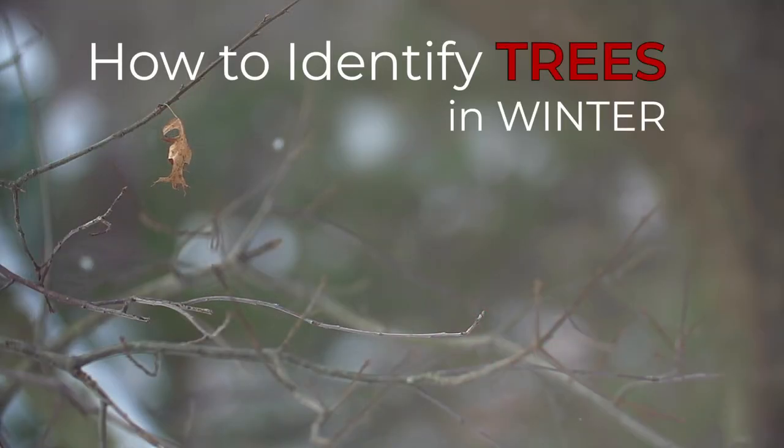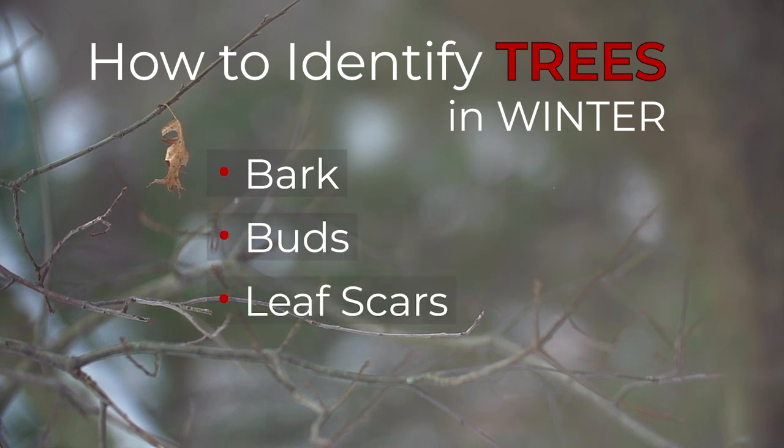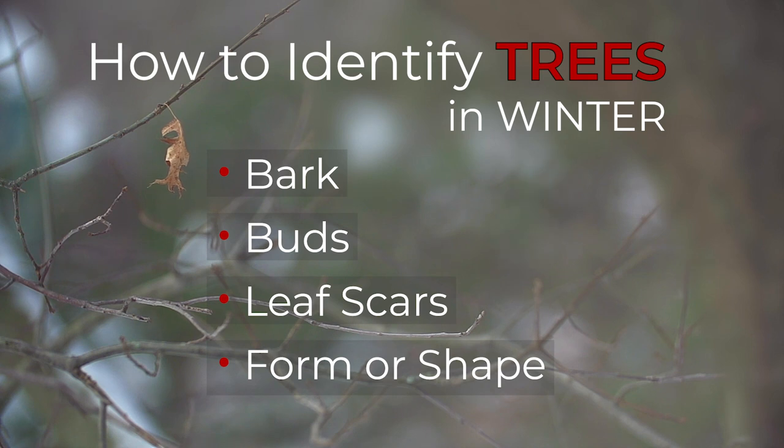Once you get conifers under control, you can turn to the broadleaf trees — that's another challenge altogether. What are you going to look for to identify broadleaf trees in winter? Well, we usually start with leaves, but I have a little trouble with leaves right now. So we could use the bark, or maybe the buds, or leaf scars, or where the leaf scars are on the twig. How about form — how it's shaped, or where it's growing, the kind of site it's in?